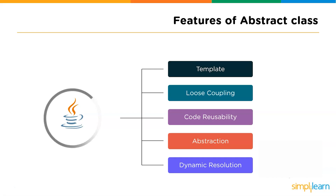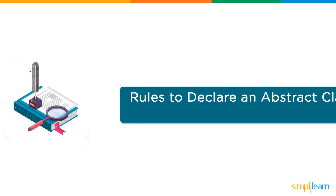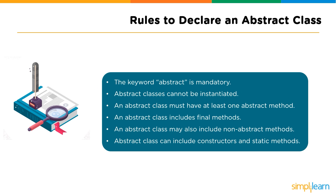Next are the crucial rules to use abstract classes. The keyword 'abstract' is mandatory to declare an abstract class. Abstract classes cannot be instantiated directly. An abstract class must have at least one abstract method. An abstract class may include final methods. It may also include non-abstract methods — it's not mandatory that it should only have abstract methods. Finally, an abstract class can include constructors and static methods.